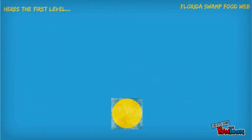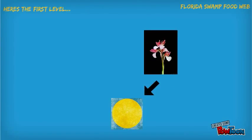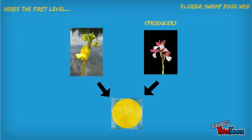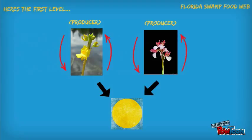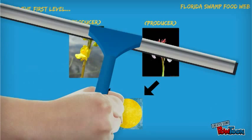First up is the sun. This is the basis for all food webs in every ecosystem. In this case, the butterfly orchid and the bladderwort use the sun's energy to create their own food in a process called photosynthesis. This makes them producers.